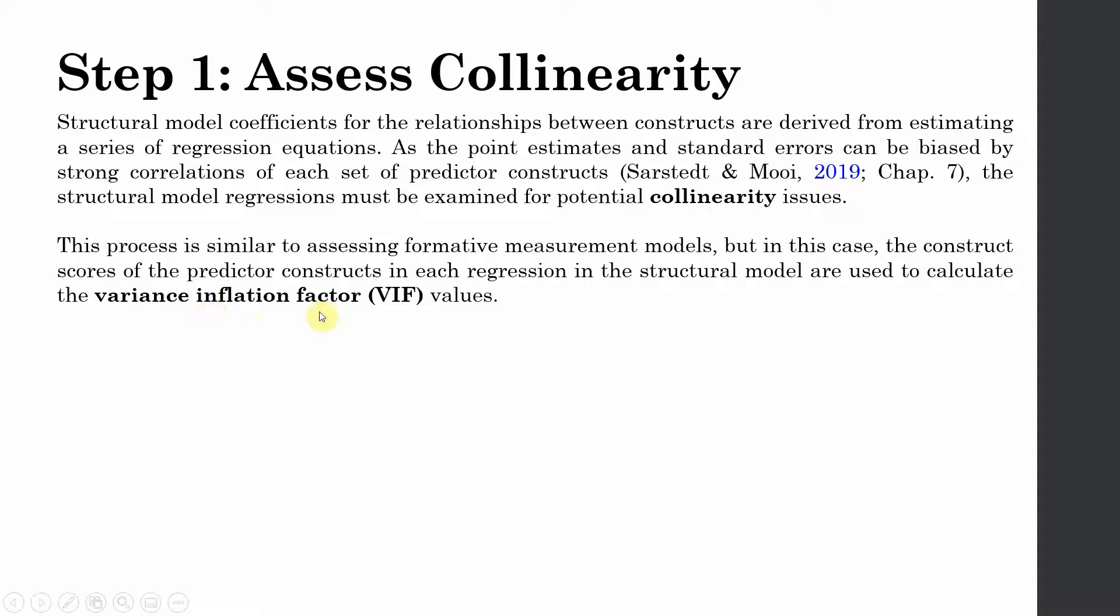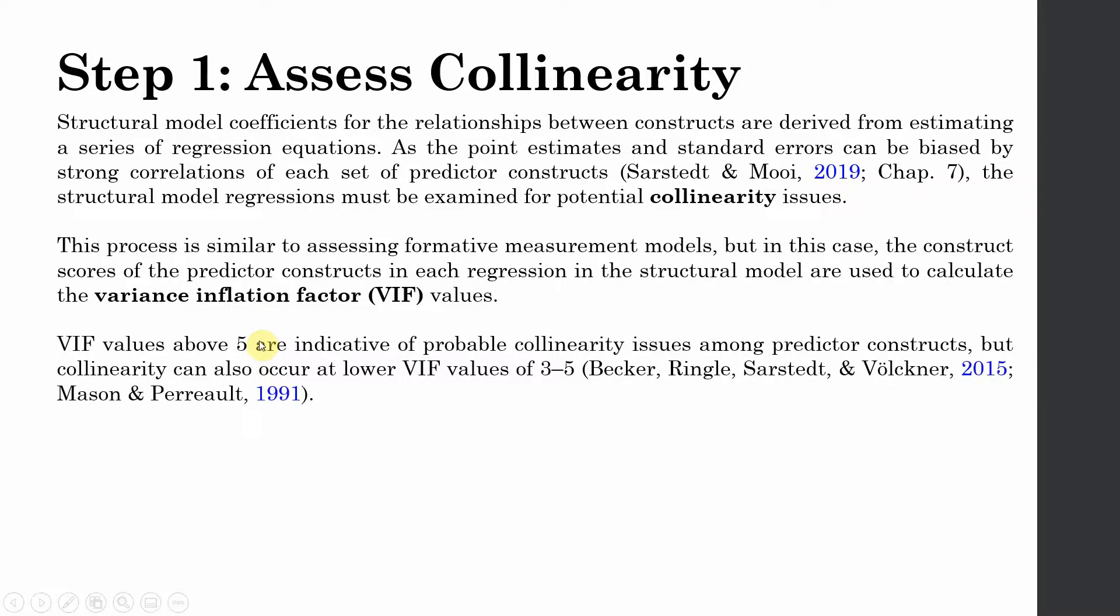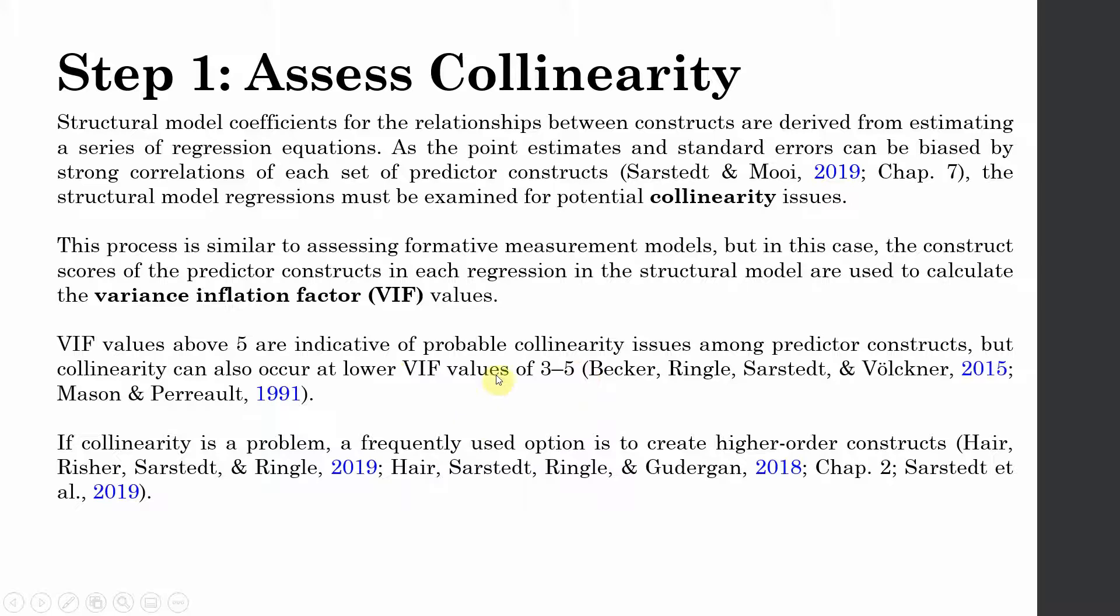How do we do this? We will check for variance inflation factor and the VIF value between 3 to 5 shows that there are no critical issues of multicollinearity. Anything greater than this may show that there is a collinearity problem. And in that case, you may want to create higher order constructs.